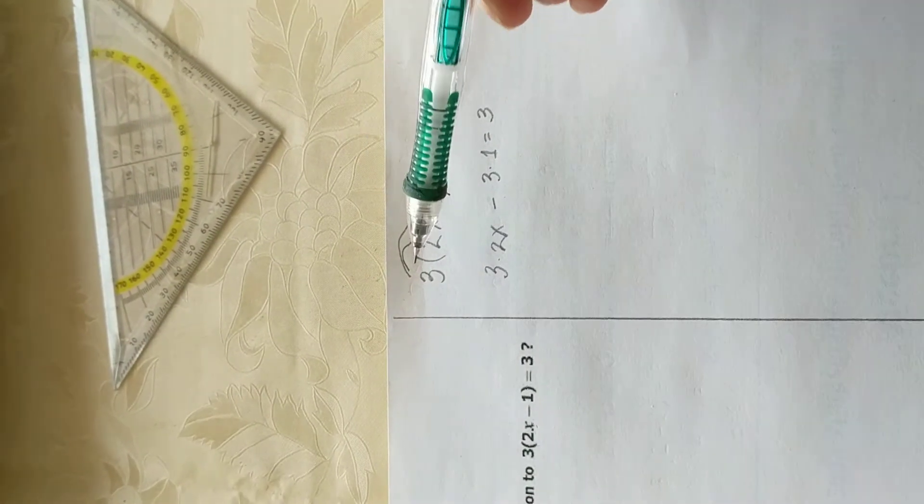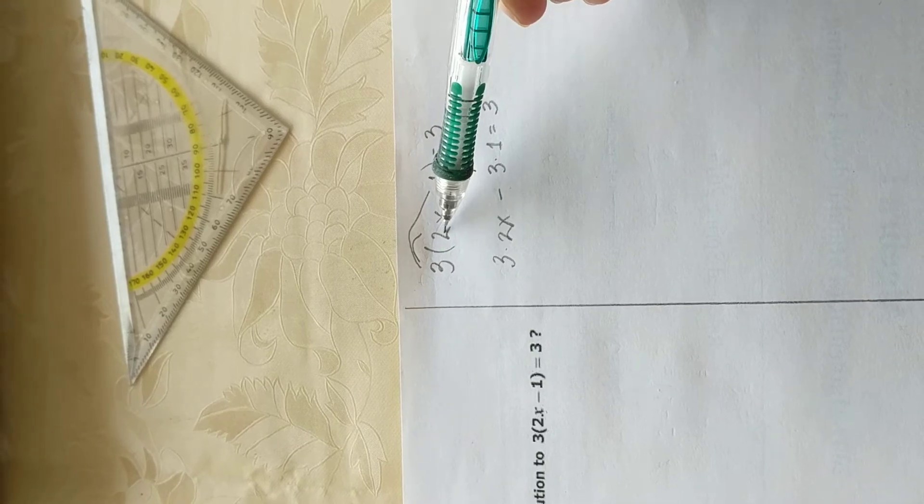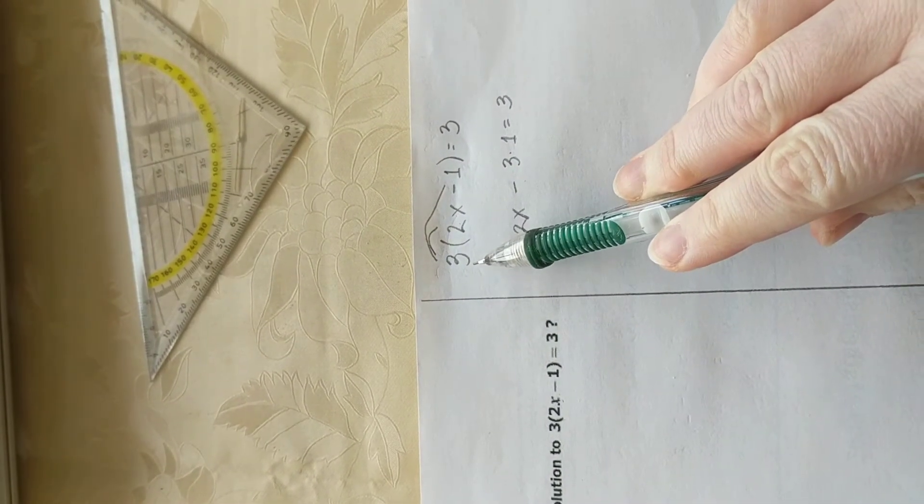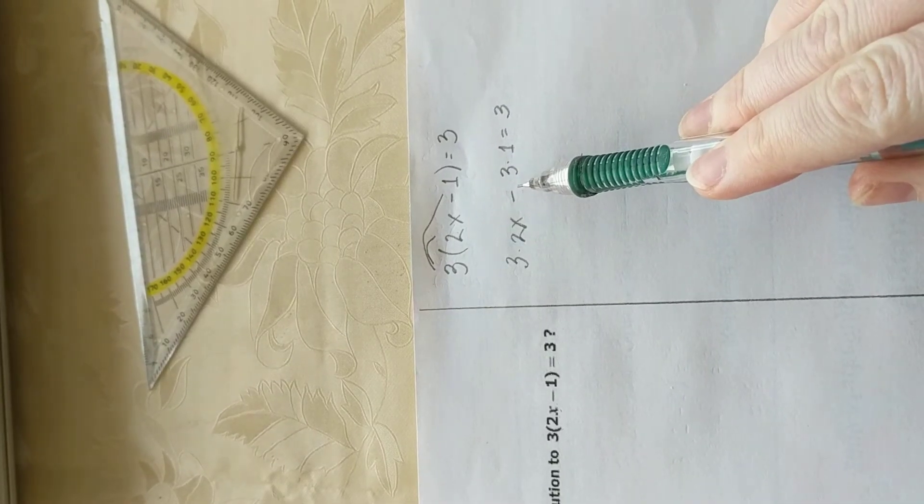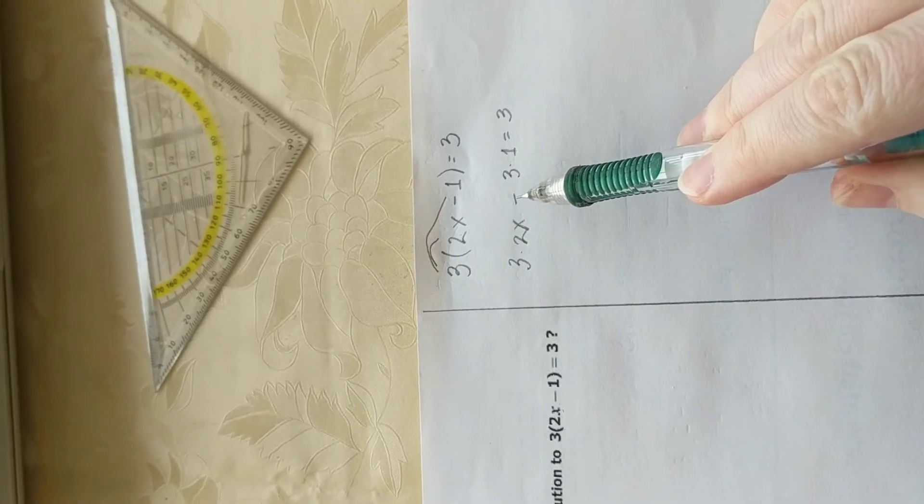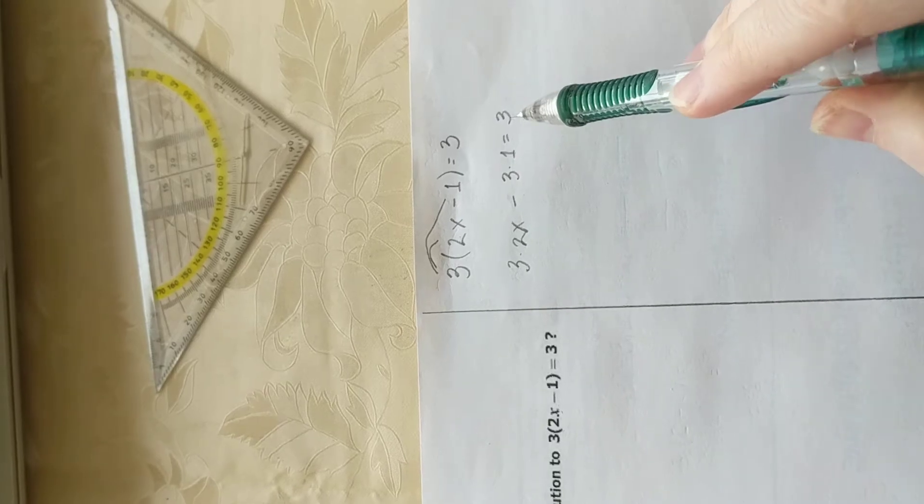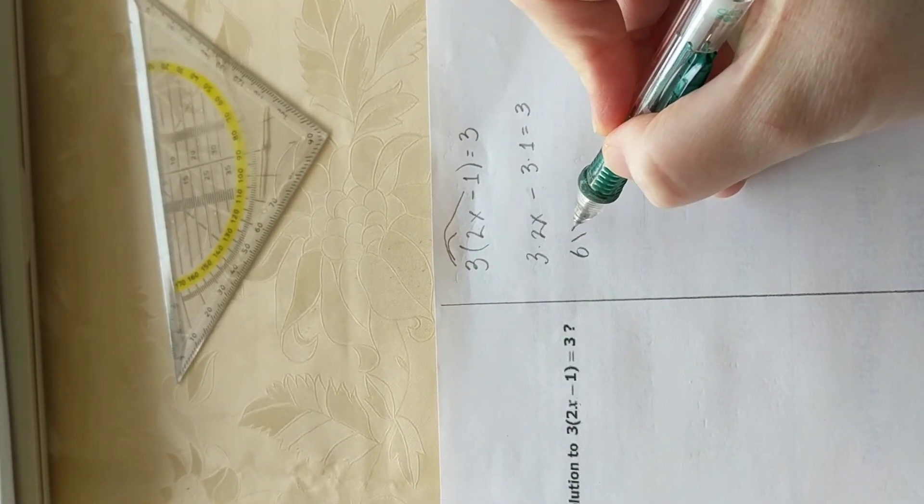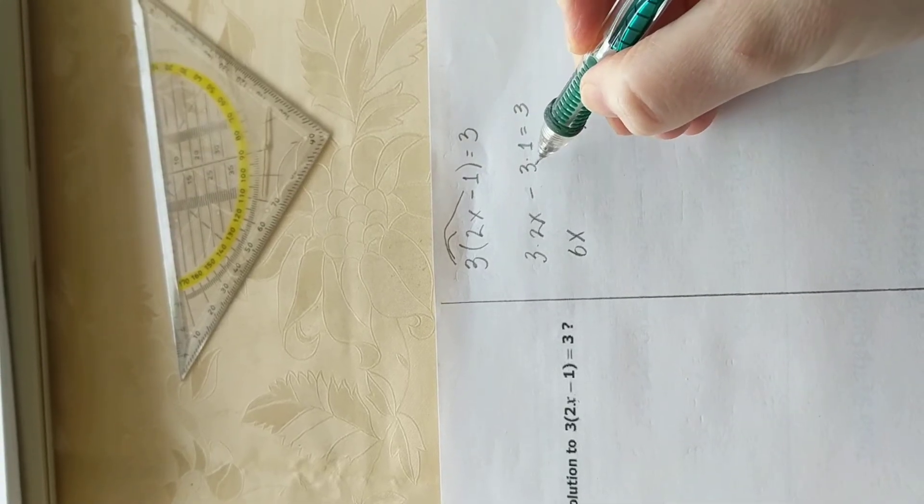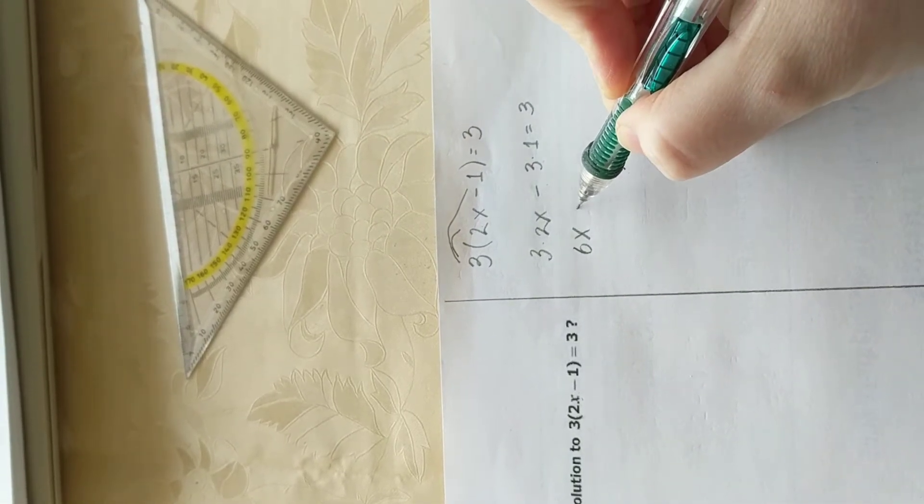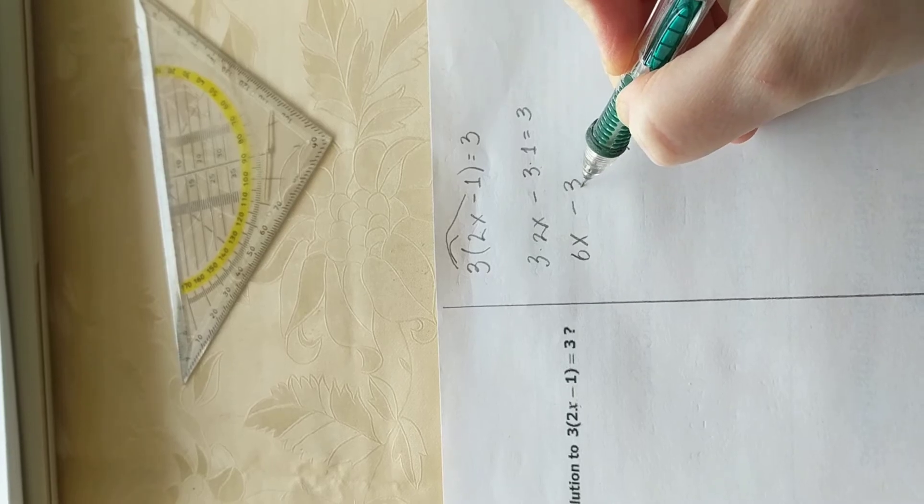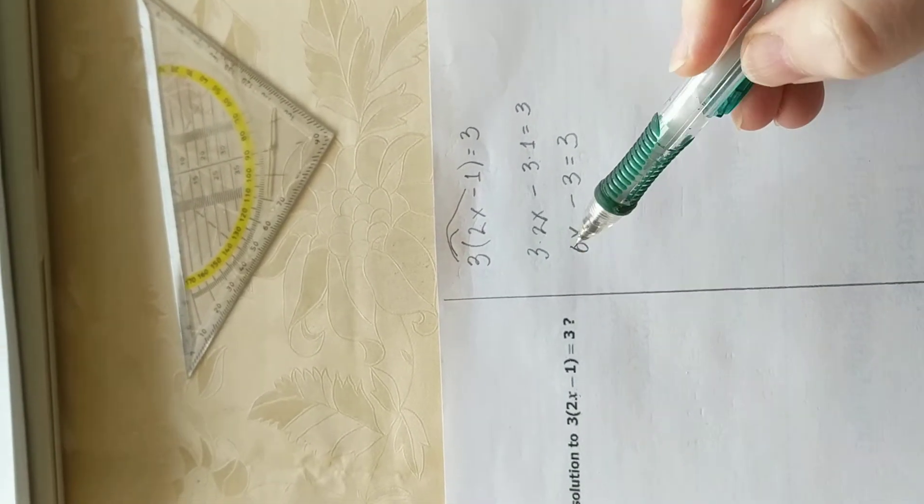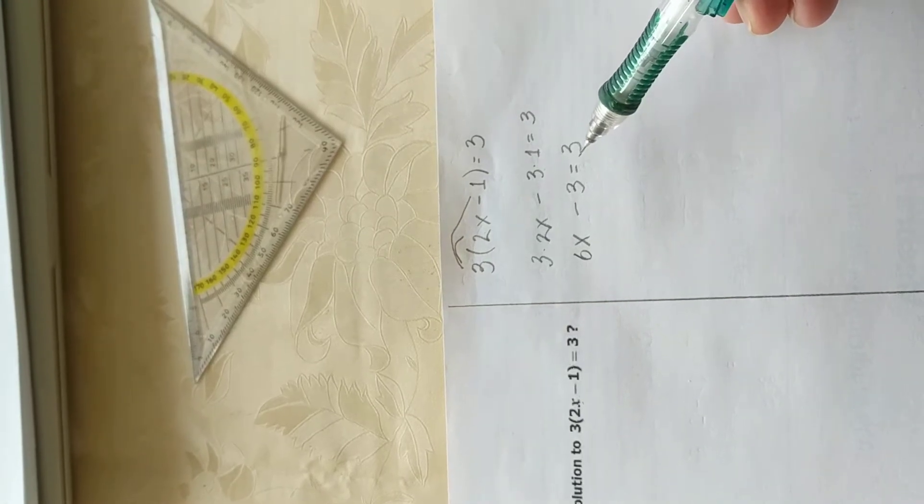So in order for us to open up the parentheses again, I'm going to use the distributive property of multiplication. I'm going to distribute the three to each term inside the parentheses, and I'm going to write that out on the next line. Okay, so first term, three times 2x. Second term, three times negative one, or minus. So minus three times one is equal to three. So three times two is six. X does not undergo any changes. Three times one is three, and the sign in between is minus. Okay, so now we're left with 6x minus 3 is equal to 3.